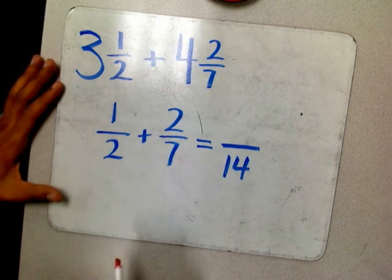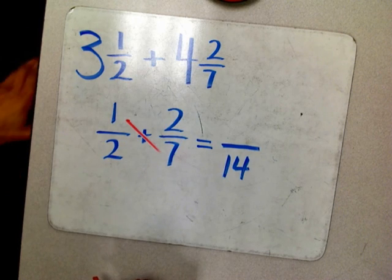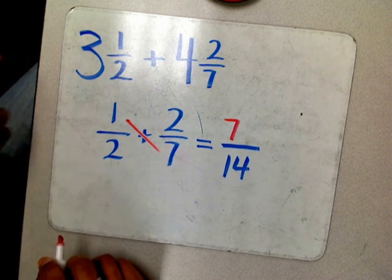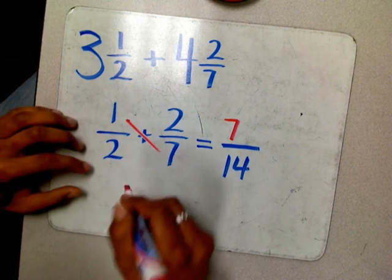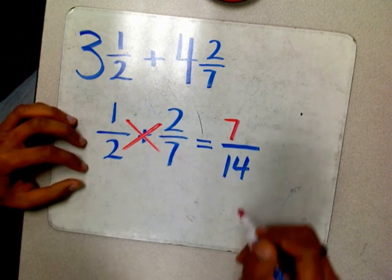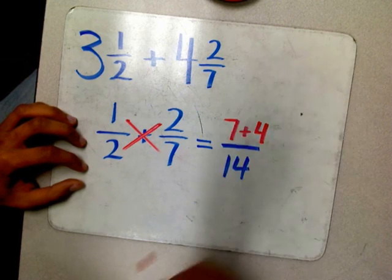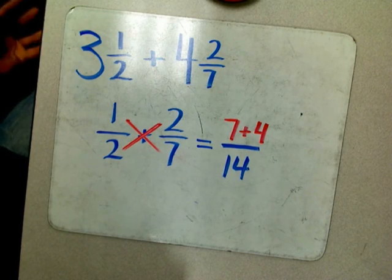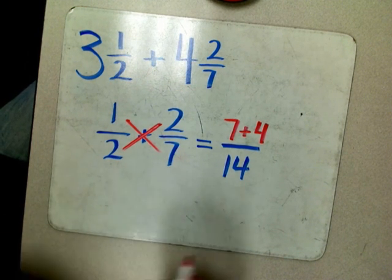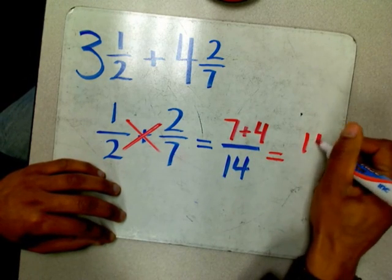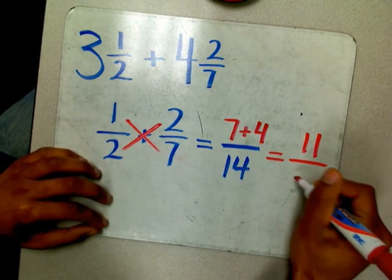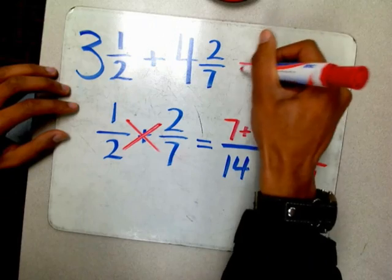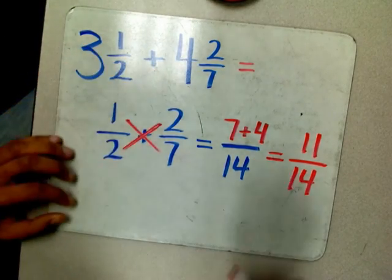The cool thing I learned from Jordan Miller is you multiply seven times one. Seven times one equals seven. Let's write that seven here. The next thing to do is to multiply two times two, and two times two is equal to four. We have to add seven to four to come up with our answer for adding these two fractions with unlike denominators. Seven plus four equals eleven, and we keep our denominator the same: fourteen.